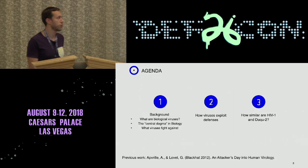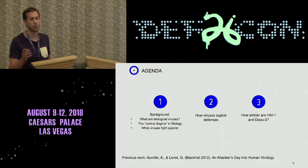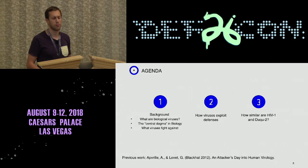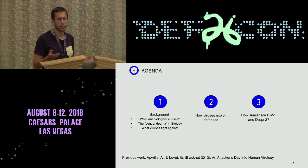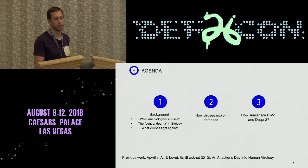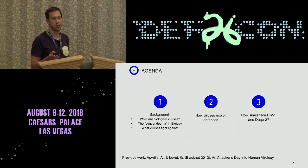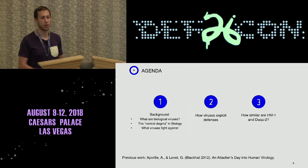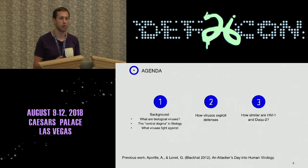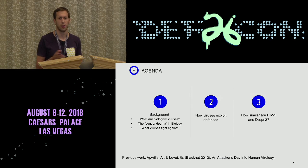The agenda for today: I'll start with some general biological background that's necessary for the second part of the talk, in which I'll talk about how viruses exploit immune defenses. In the third part, I'll conclude and compare a well-known virus and a well-known malware — HIV-1 and Duqu2 — to see if they're similar in any way.